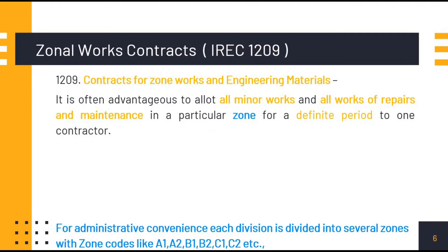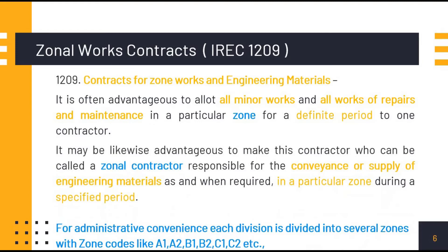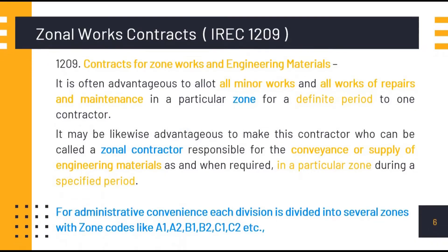According to Engineering Code Para 1209, under Contracts for Zone Works and Engineering Materials, it is often advantageous to allot all minor works and all works of repairs and maintenance in a particular zone for a definite period to one contractor. It may likewise be advantageous to make this contractor — who can be called a Zonal Contractor — responsible for the conveyance or supply of engineering materials as and when required in a particular zone during a specified period.